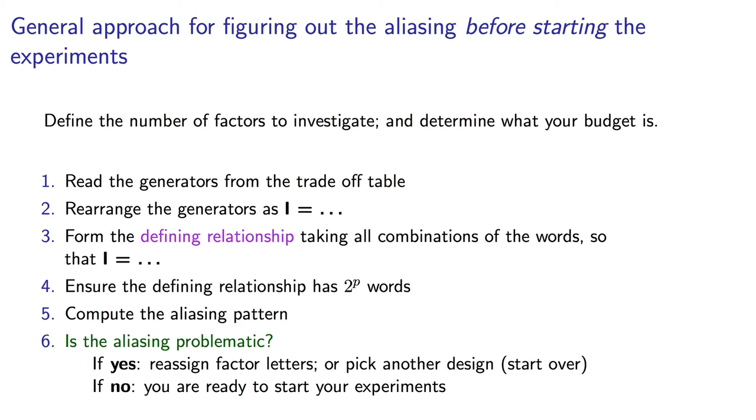Firstly, read the generator from the trade-off table. Secondly, multiply the generators to express them as I equals. Thirdly, take all combinations of the words from the rearranged generators to form the defining relationship.